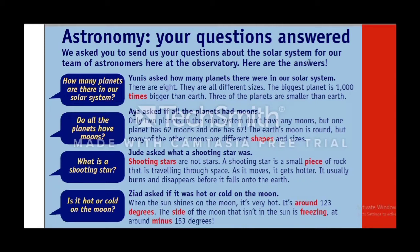Question one: how many planets are there in our solar system? Eunice asked how many planets there were in our solar system. There are eight. They are all different sizes. The biggest planet is one thousand times bigger than Earth, and three of the planets are smaller than Earth.